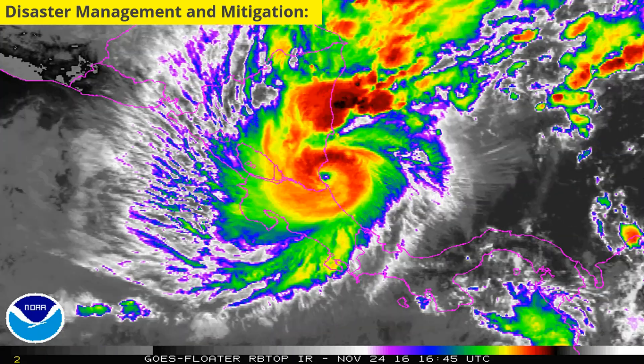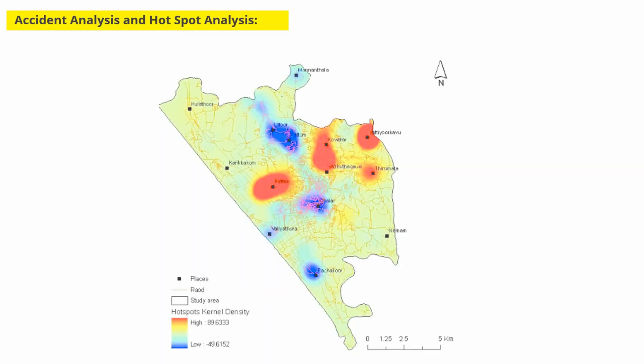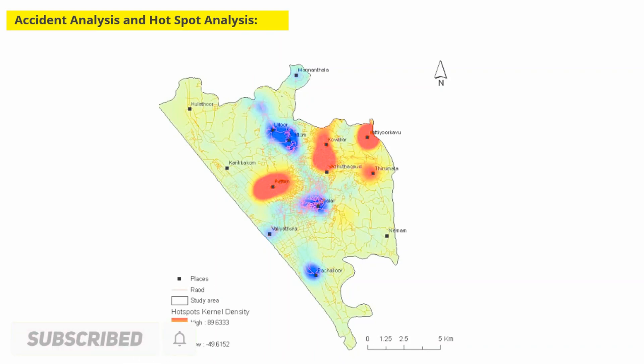Topic number two is accident analysis and hot spot analysis. GIS can be used as a key tool to minimize accident hazards on roads. The existing road network has to be optimized and road safety measures have to be improved. This can be achieved by proper traffic management and by identifying accidental locations using GIS.